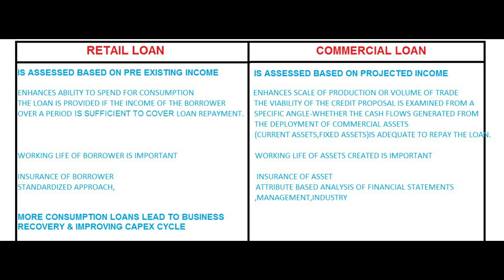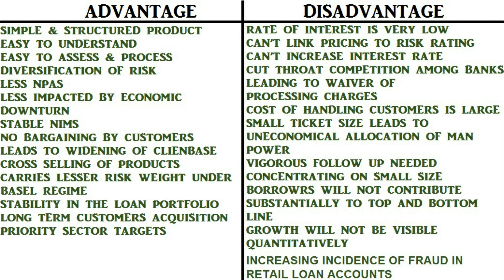Key differences between retail loans and commercial loans: retail loan is based on pre-existing income; commercial loan is based on projected income. Retail loan enhances the borrower's ability to spend for consumption; commercial loan enhances scale of production or volume of trade. In retail loans, repayment depends on the borrower's income over a period; in commercial loans, cash flow generated from commercial assets is examined. Working life of the borrower is important in retail loans; working life of the asset created is important in commercial loans. Insurance of the borrower is obtained in retail loans; insurance of the asset is obtained in commercial loans. Commercial loans use a standardized approach with attribute-based analysis of financial statements, management, and industry.